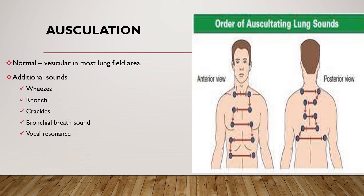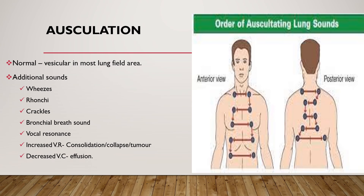Vocal resonance is classified into bronchophonia and whispering pectoriloquy. Increased vocal resonance occurs in consolidation, collapse, and tumor — the patient is asked to say '99', '77', '44' while we auscultate the chest. Decreased vocal resonance may indicate effusion. In whispering pectoriloquy, when a cavity communicates with a bronchus, whispered words are clearly heard through the stethoscope.